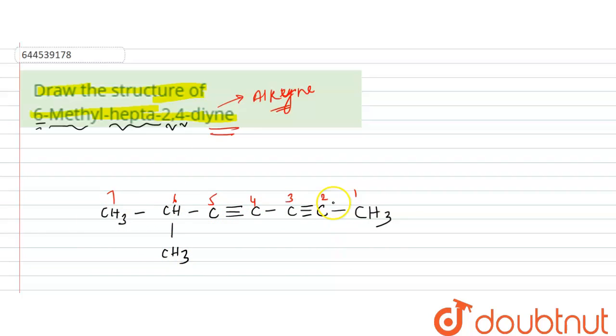And at the second and fourth positions you have the triple bonds - that is the alkyne. That's why we have written diyne. And for diyne, you know that this A will be retained in hepta, so we have retained this A.